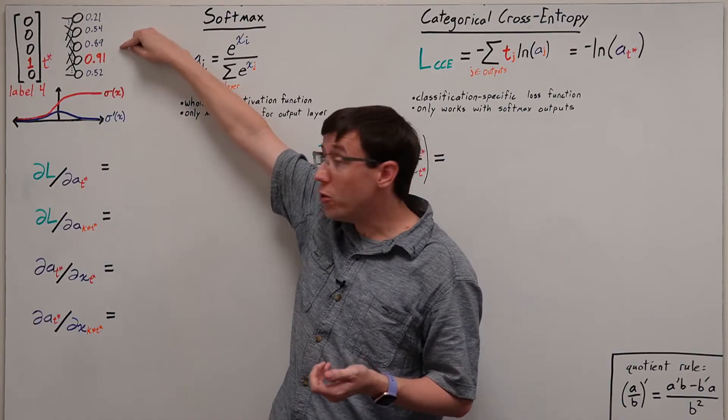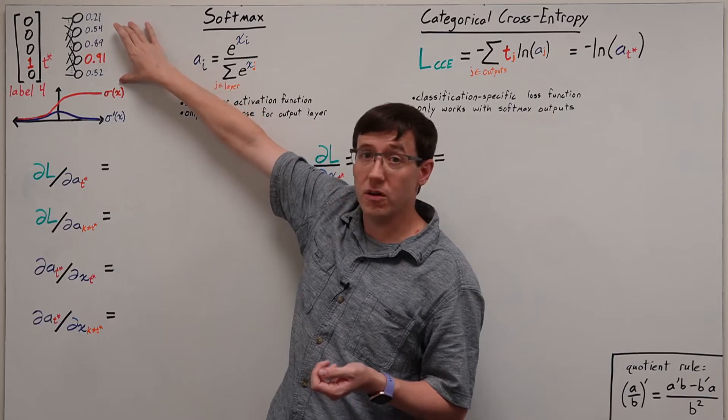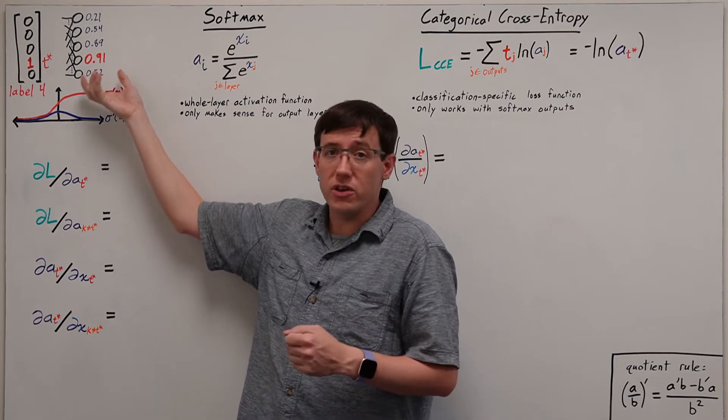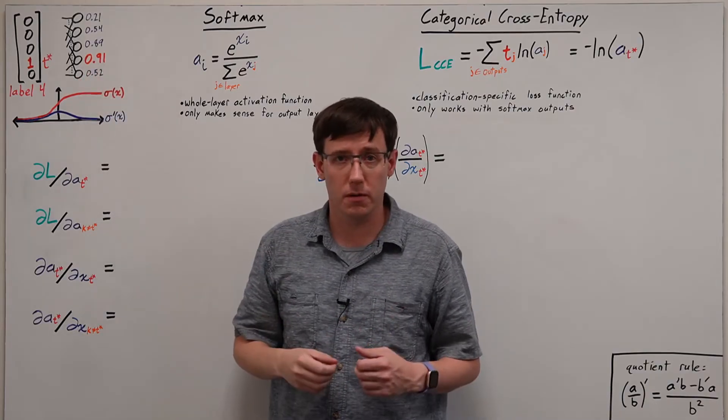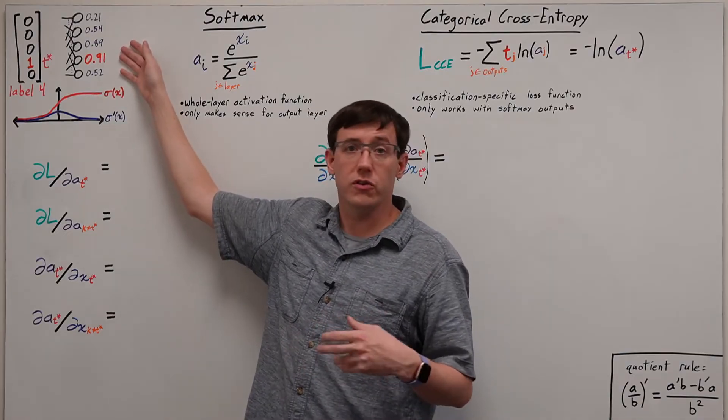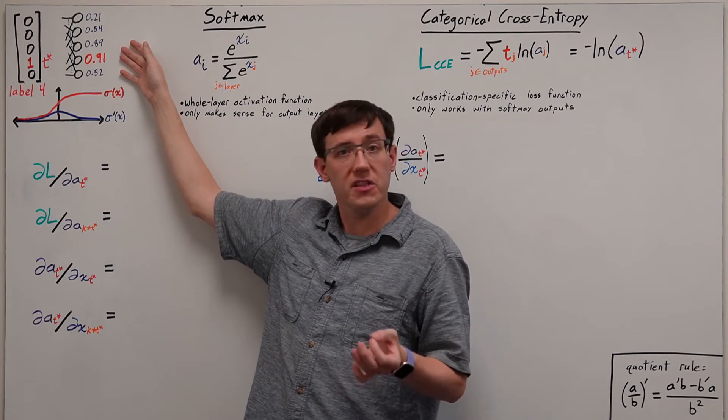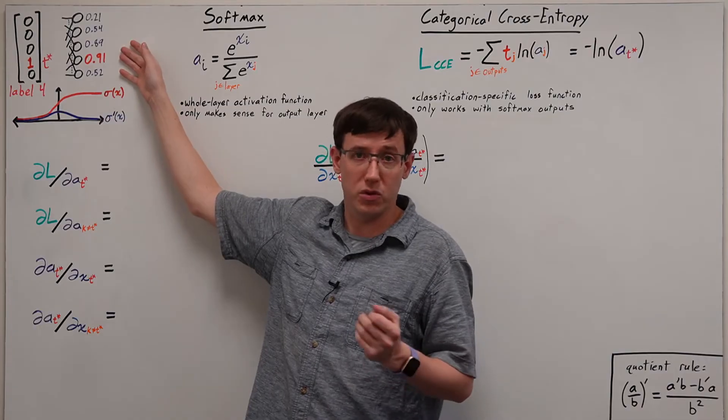But we have an activation that's almost as large for label 3, and other activations that are also quite far from 0. And so if our neural network gave this sort of output, it would be rather hard to interpret the prediction. What we'd really like is for the output layer to produce 0s and 1s, or failing that, for it to produce something that we can interpret as confidence in different possible labels.